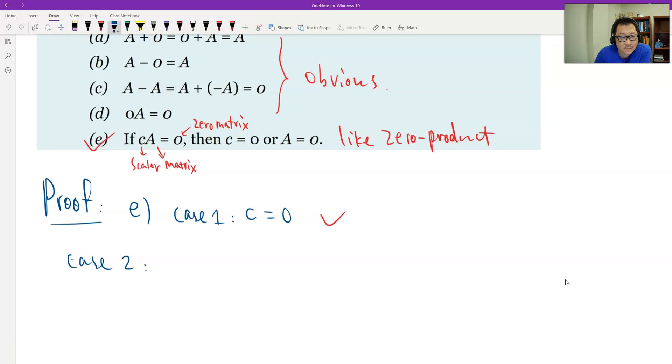If C is not zero. Case two, C is not zero. Another zero is a scalar number. And then what do we have? We have, let's do calculation.